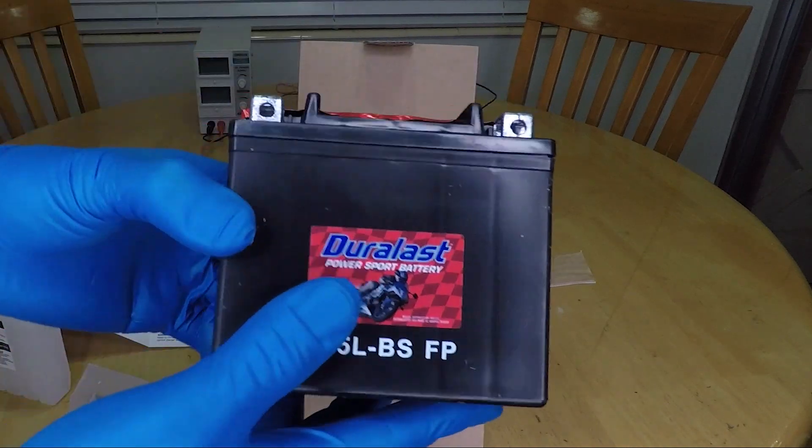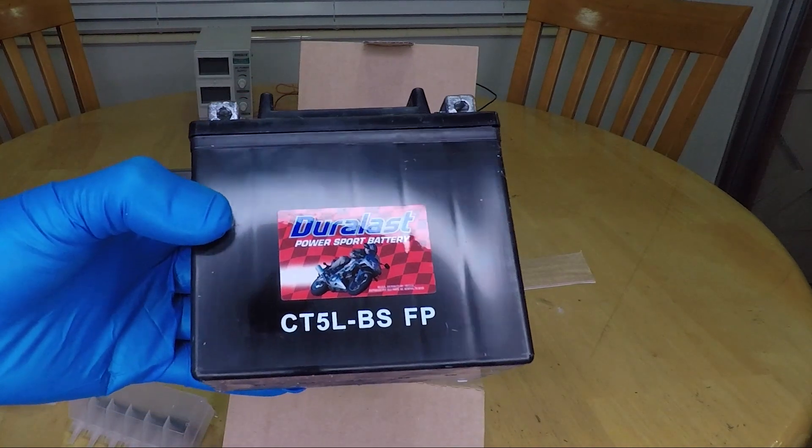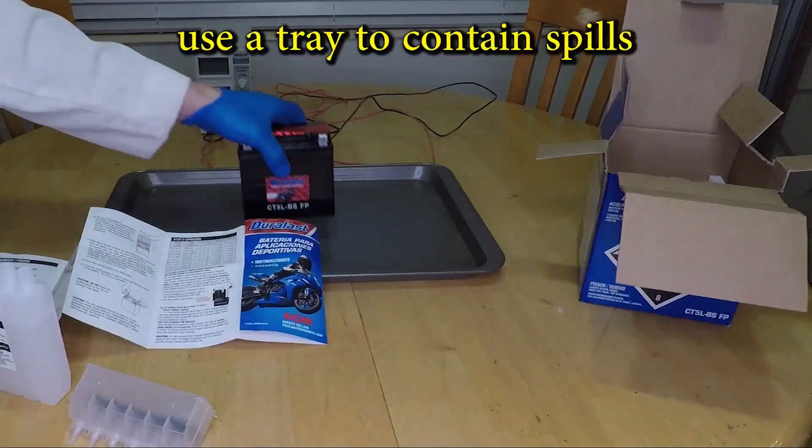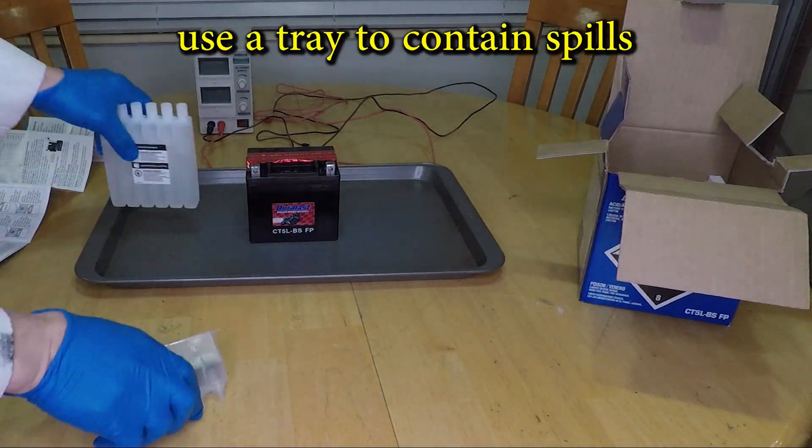This is the battery. CT5L is the size. The letters vary a bit with different manufacturers but the same battery will probably have a number 5 in there somewhere. I'll be working on a tray in case I spill any acid.